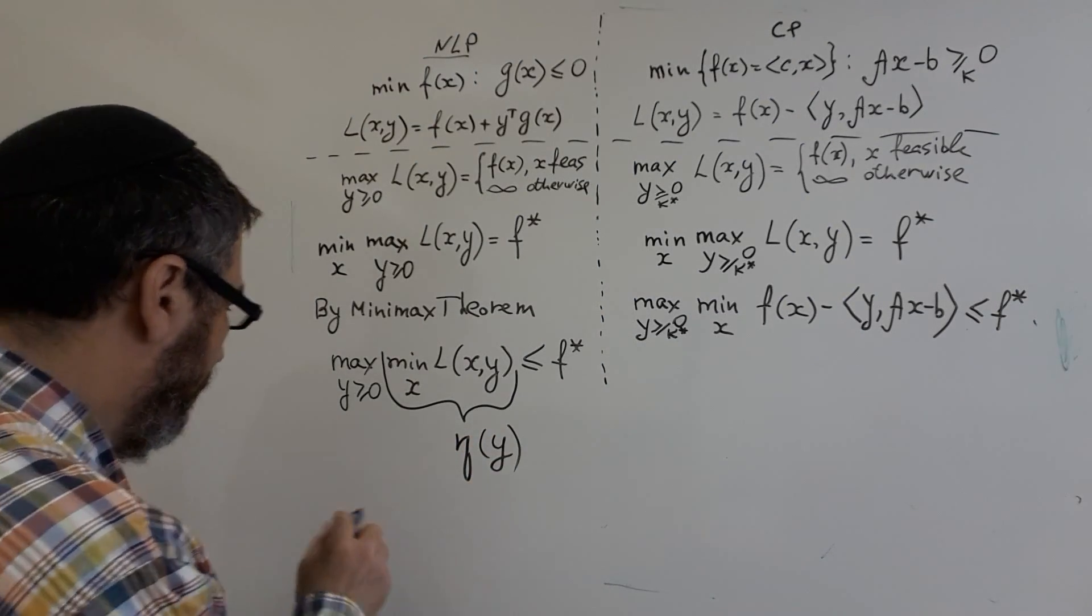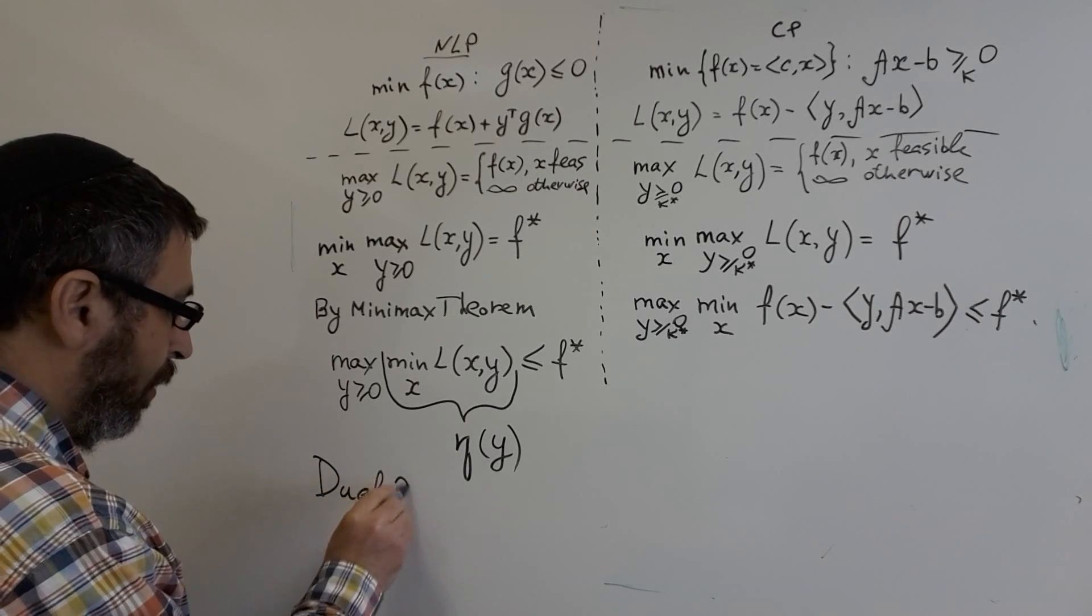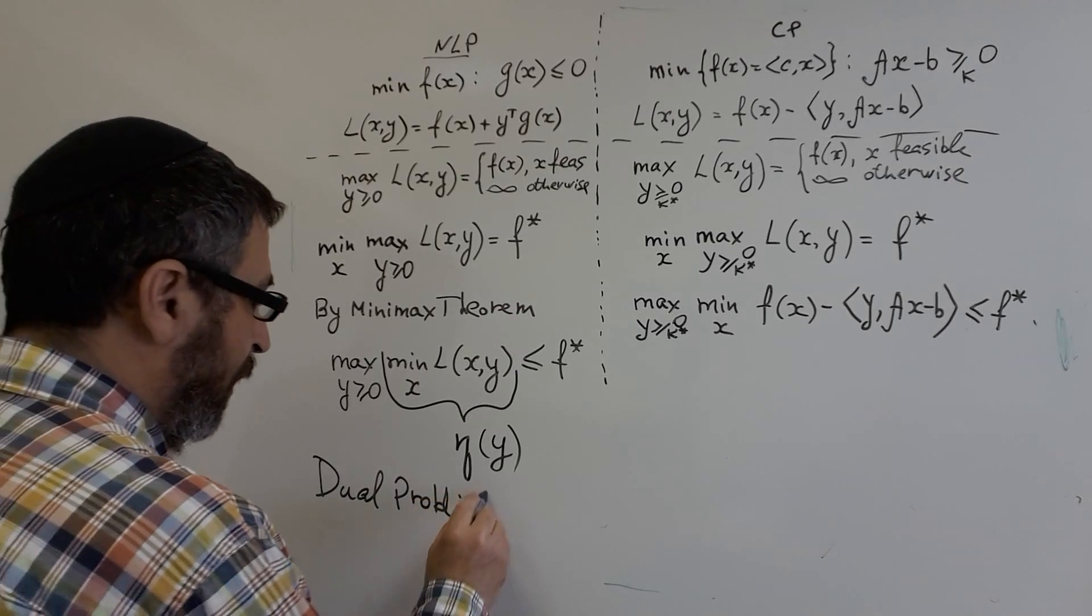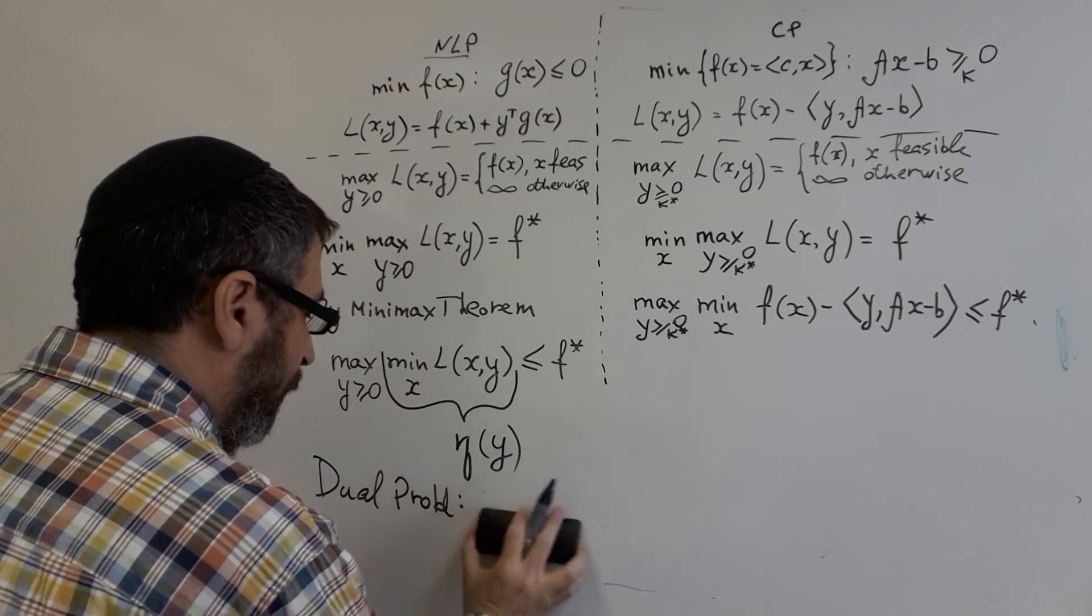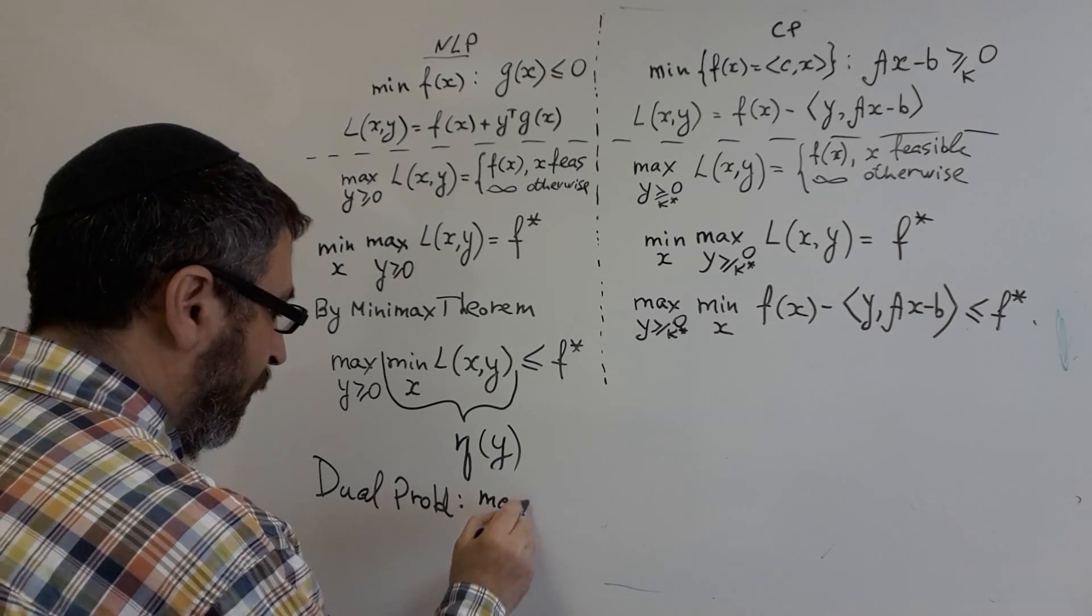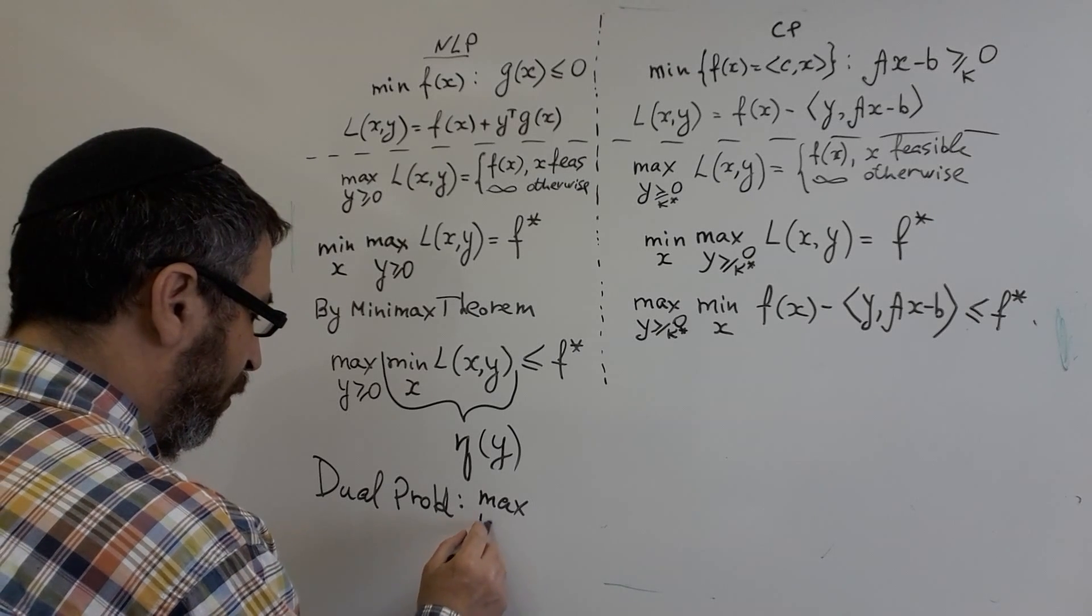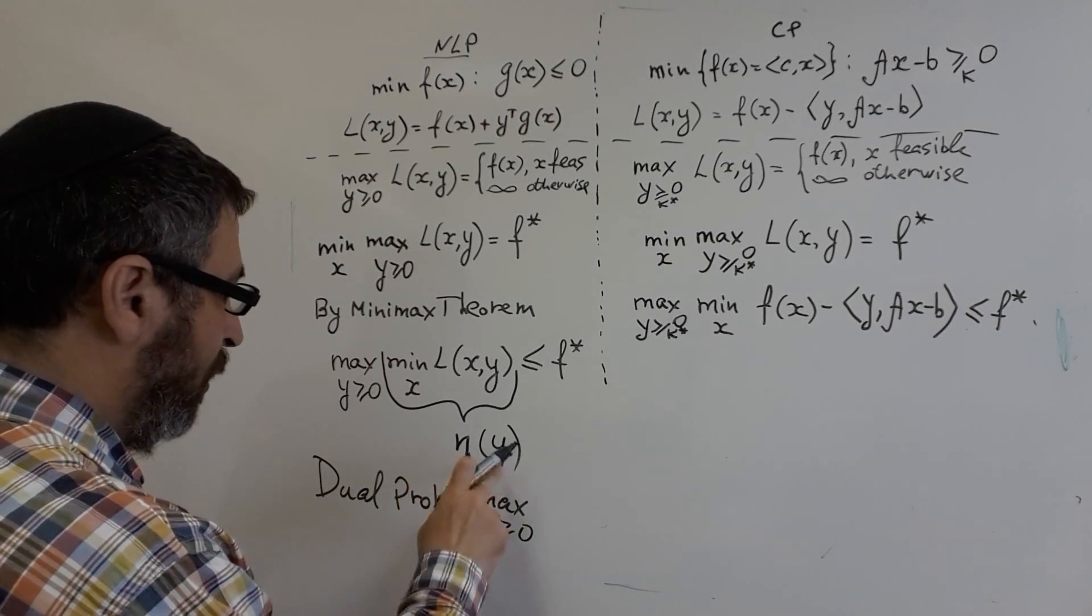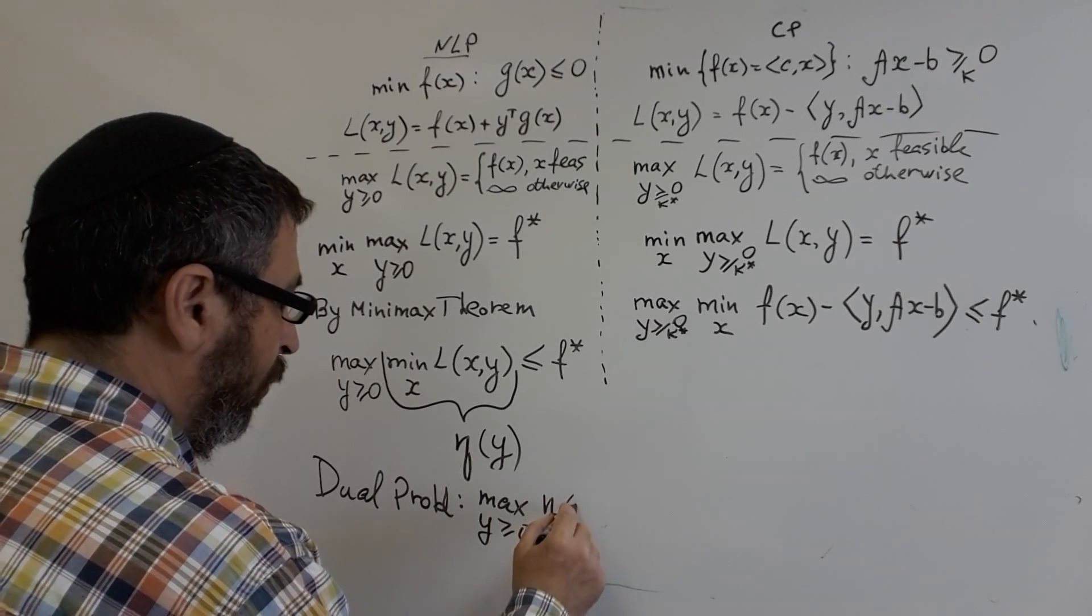And this is the weak duality theorem. And this function is denoted as eta of Y. And the dual problem is just maximize over feasible Y, over Y greater or equal to zero, this dual function eta of Y.